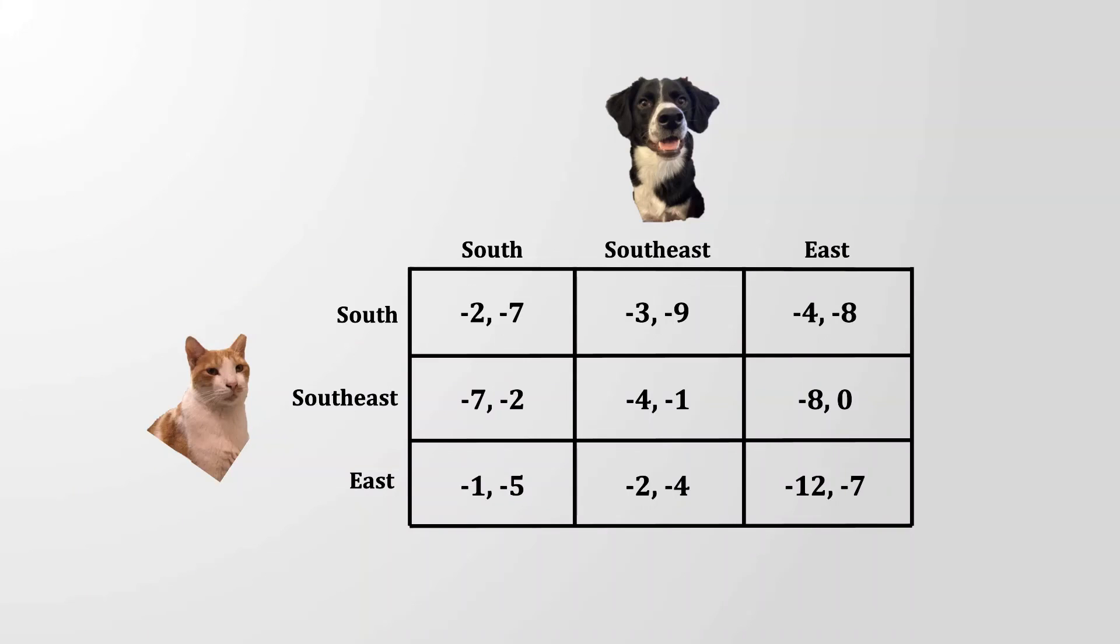And for those of you who are more game-theoretically inclined and wanted to work through the Matrix version of this game, you would note first that the cat's south strategy strictly dominates southeast. In the remaining game, the dog's south strategy strictly dominates east. In the remaining game from there, the cat's east strategy strictly dominates south. And in the remaining game there, the dog's southeast strategy dominates south. And that's how we get to the east-southeast outcome with negative two and negative four, representing two cats in the way and four dogs in the way.